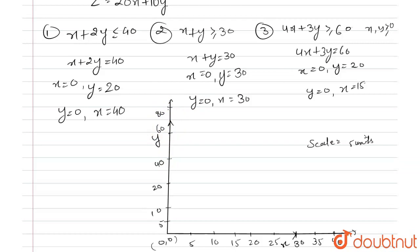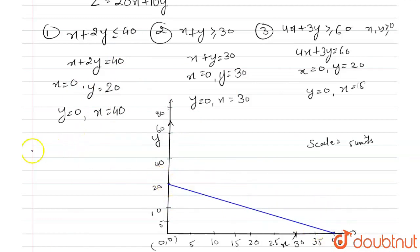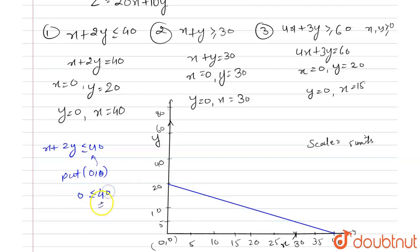First, we plot the curve x plus 2y equals 40. When x equals 0, y equals 20, and when y equals 0, x equals 40, so the curve is drawn accordingly. Now for the inequality x plus 2y less than or equal to 40, we put the origin (0, 0) into the equation and get 0 less than or equal to 40, which is satisfied. So this equation contains the region on the origin side.